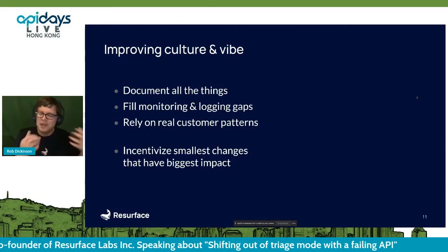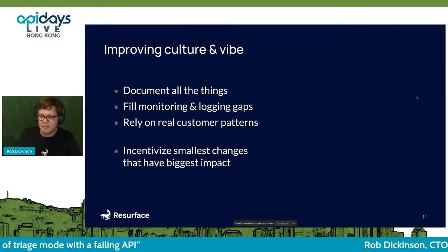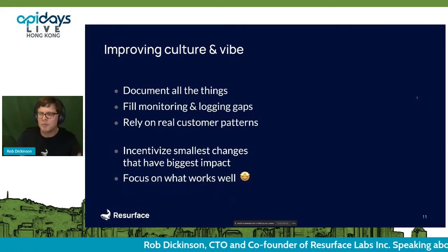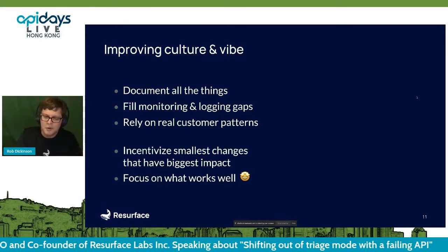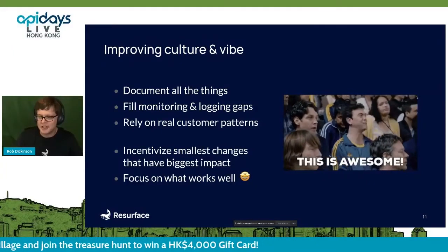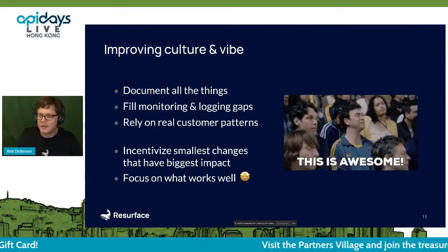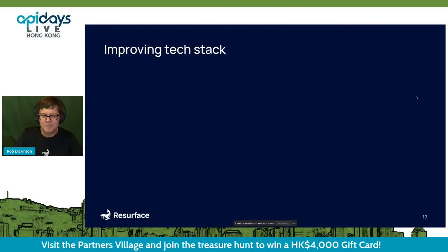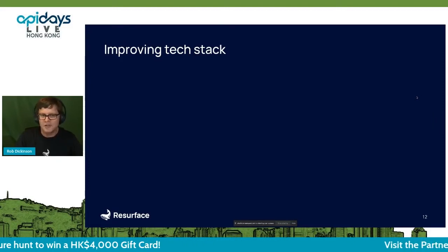Then you can start to rely on real customer patterns — and this is one of the best things about doing a turnaround: you usually have an existing customer base or usage patterns to draw on. That's the best kind of data. This allows you culturally to incentivize the smallest changes that have the biggest impact. You want to double down on what works really well, focus on that, and build new things around that vision — creating a new sense of energy in your development team.